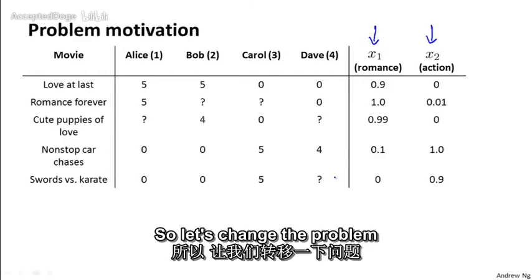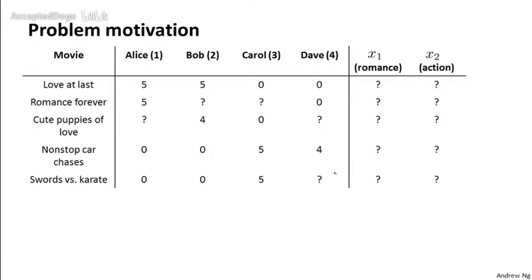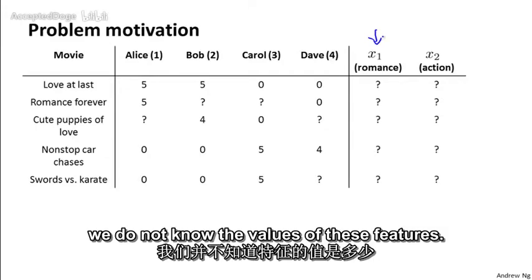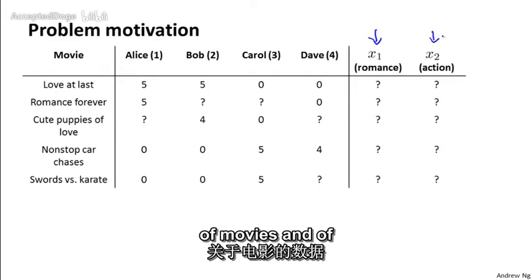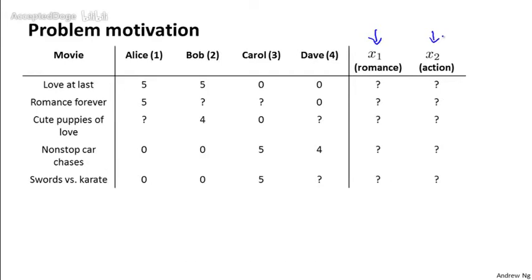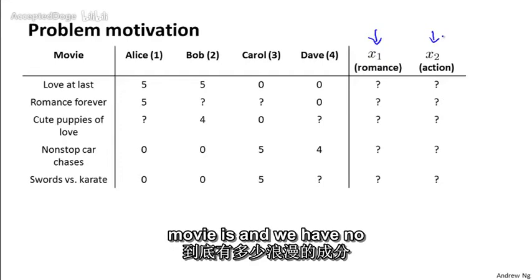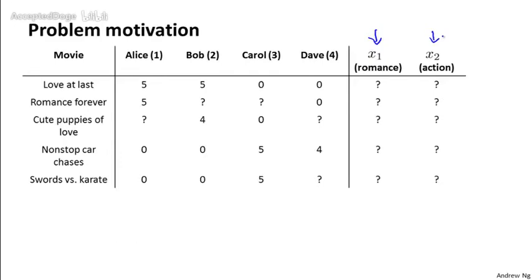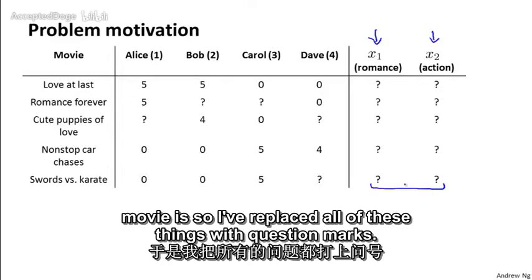So let's change the problem a bit and suppose that we have a data set where we do not know the values of these features. So we're given a data set of movies and of how the users rated them. But we have no idea how romantic each movie is and we have no idea how action-packed each movie is. So I've replaced all of these things with question marks.